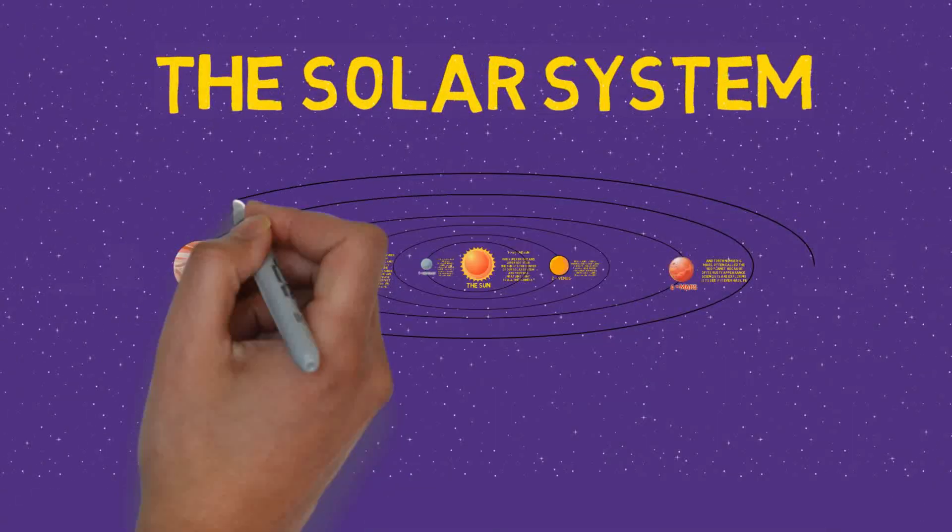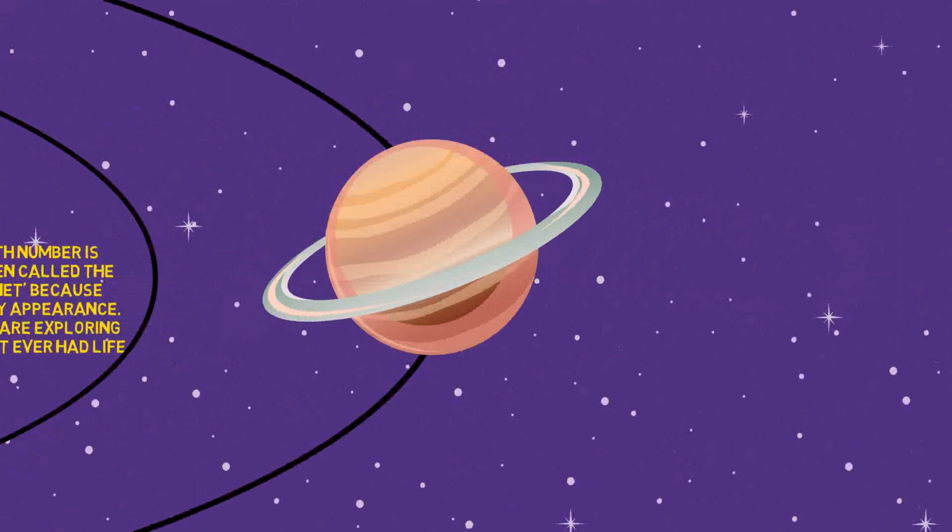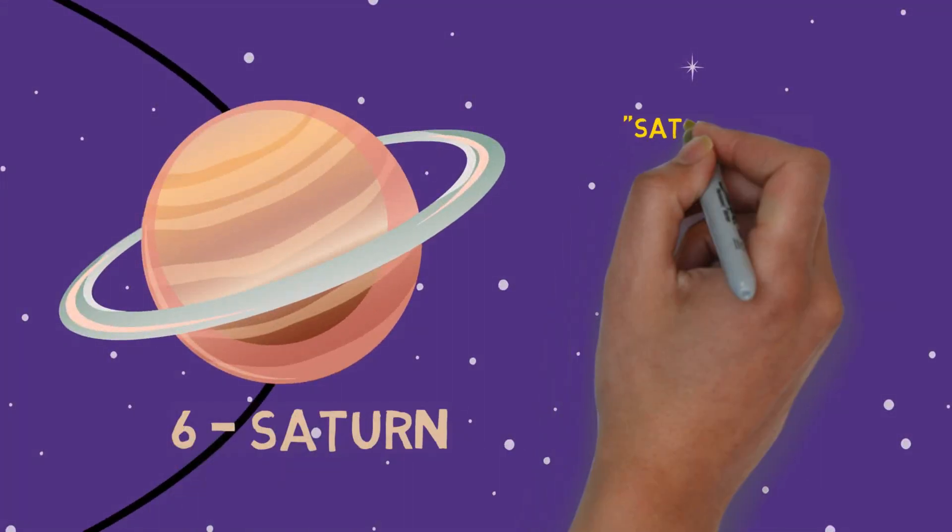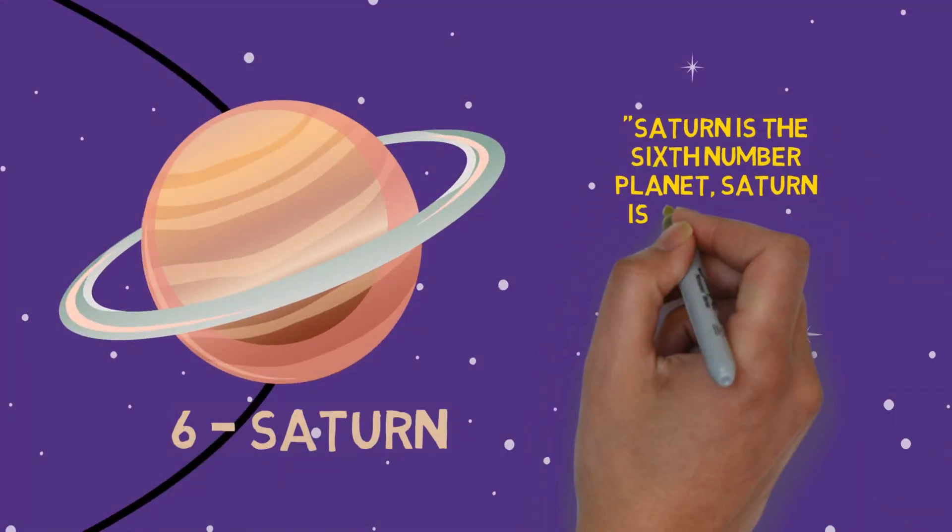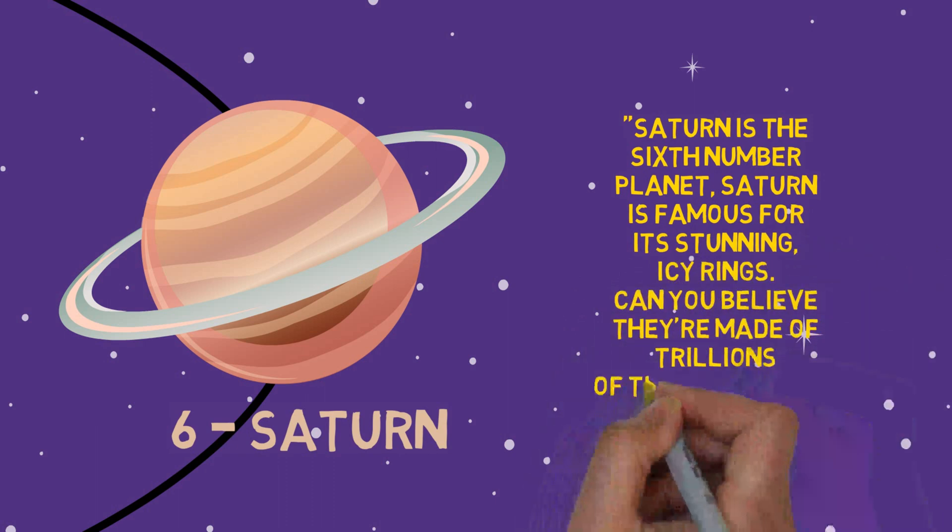Saturn is the sixth planet. Saturn is famous for its stunning icy rings. Can you believe they're made of trillions of tiny particles?